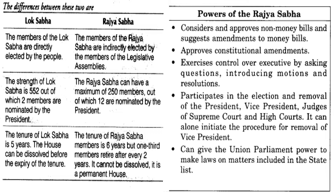These 12 people are coming from the society — people who have social values, who are respectable persons in the society, people love them. That kind of people are selected as members by the President of India, like Sachin Tendulkar. Sachin Tendulkar is the honorary member of Rajya Sabha.